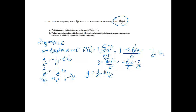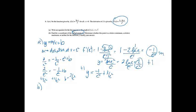That problem was worth 2 points. If you correctly found the slope and the y value, you'd get one point, and if you correctly wrote the equation of the tangent line, you'd get your second point. Next part: find the x-coordinate of the critical point of f.